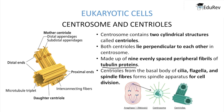Centrioles form the basal body of cilia and flagella, and the spindle fibers form a spindle apparatus. The centrioles are arranged on either side of the cell, and their function is to pull the chromosomes during the process of cell division, so that a single cell divides into two cells with the genetic material distributed in both.